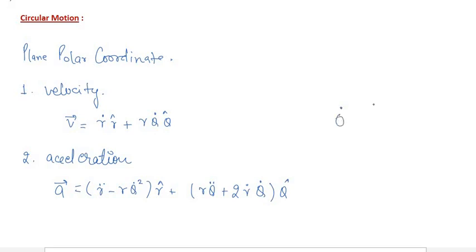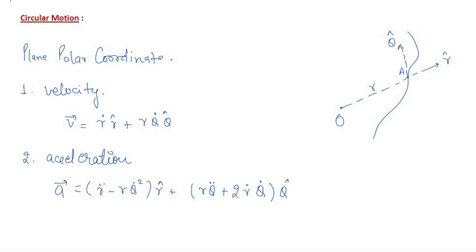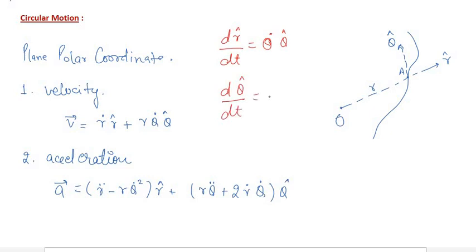If there is an origin O and a path, and we are at point A, then r-cap is the radial direction and theta-cap is the direction perpendicular to r-cap. Both r-cap and theta-cap change with time. We derived that d(r-cap)/dt equals theta-dot times theta-cap, and d(theta-cap)/dt equals minus theta-dot times r-cap.